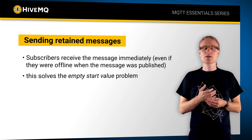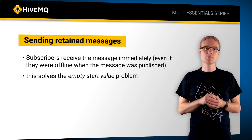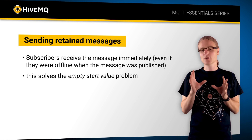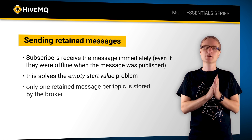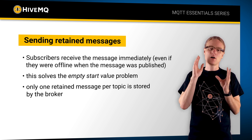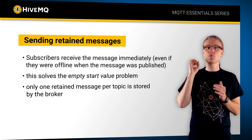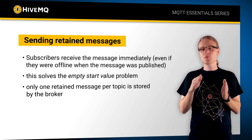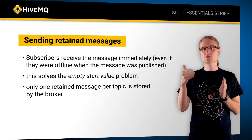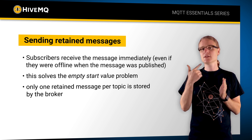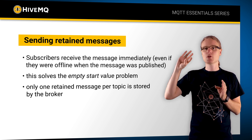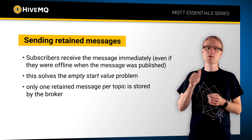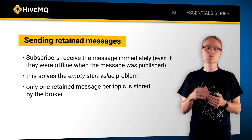It's a great way to solve the start value problem where you need some values to start. The broker will also overwrite old messages, so you only have one message per topic persisted. What you usually do is send each message as a retained message and the broker will just overwrite the older values for you, guaranteeing only one message per topic.